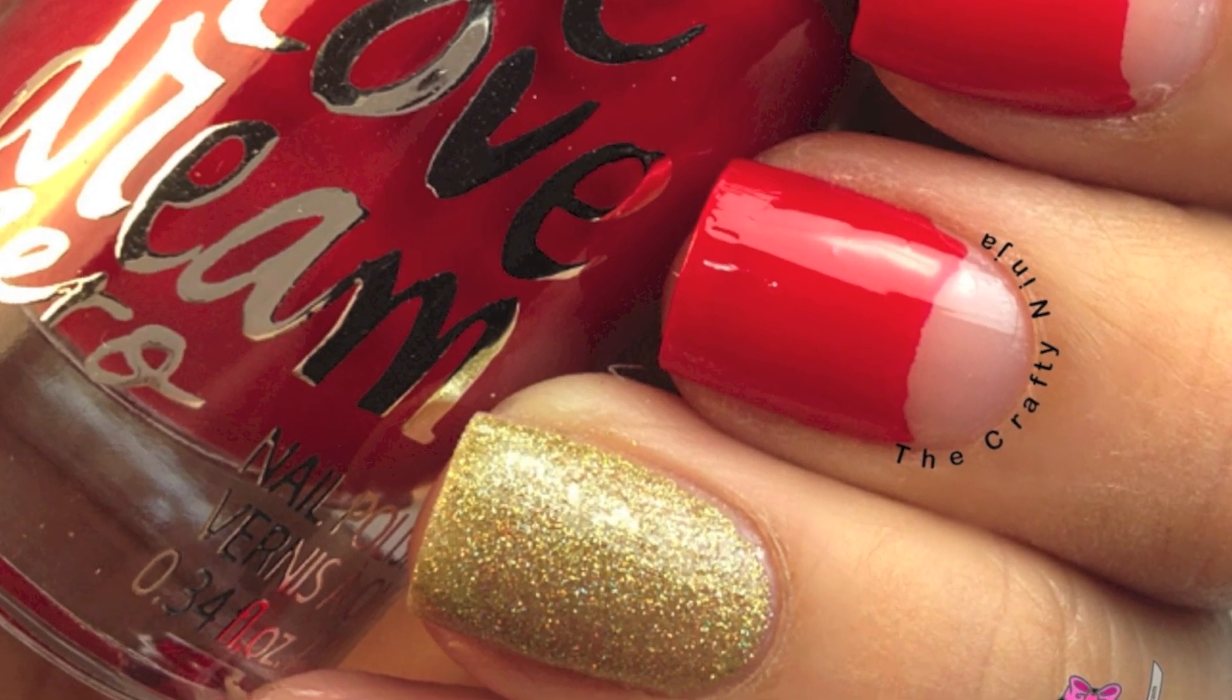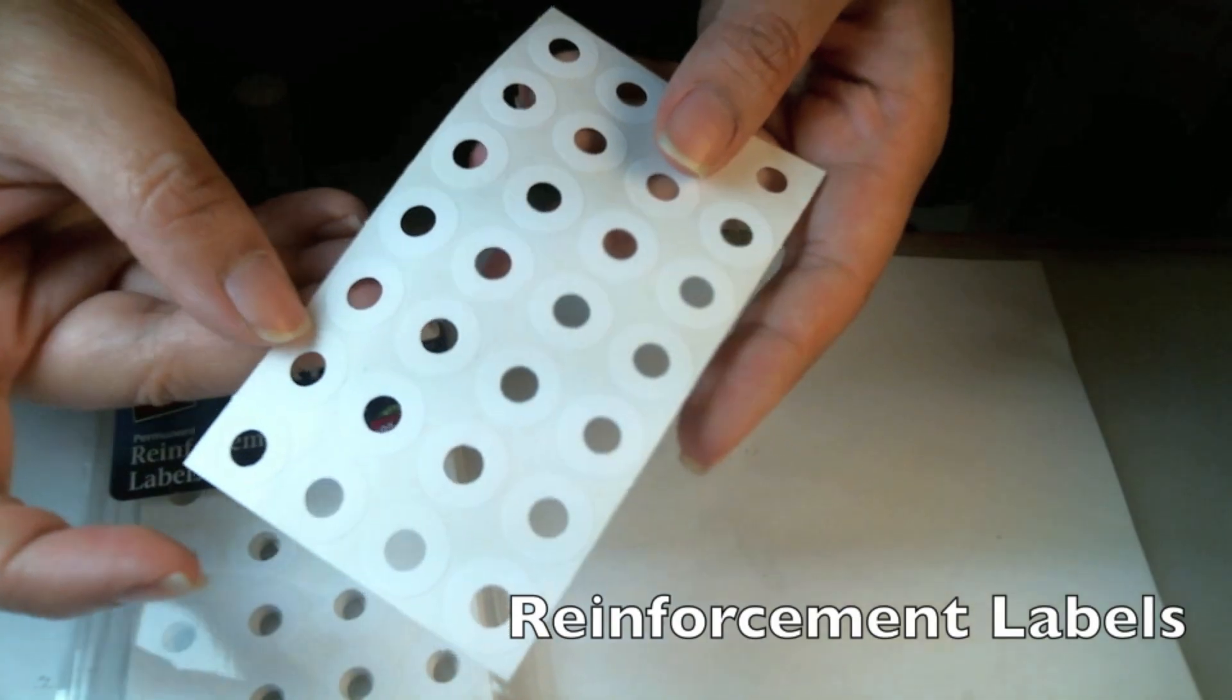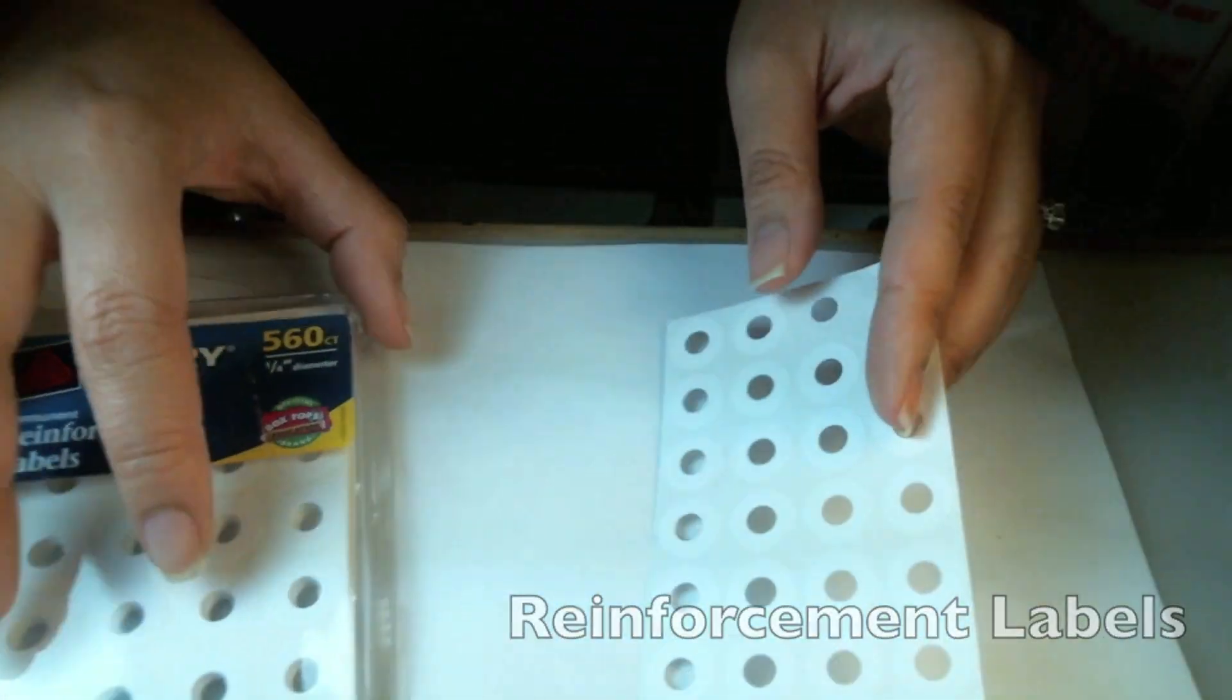For this half moon mani tutorial, you're going to need reinforcement labels which you can pick up at an office supply store.